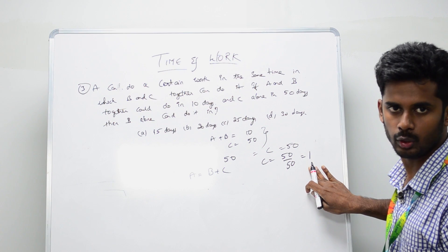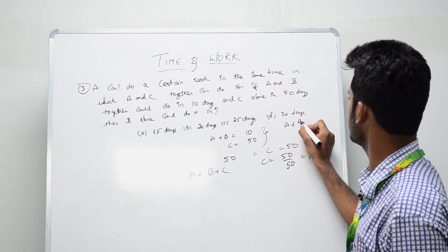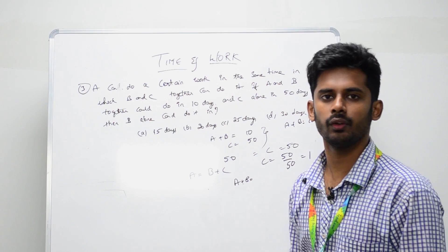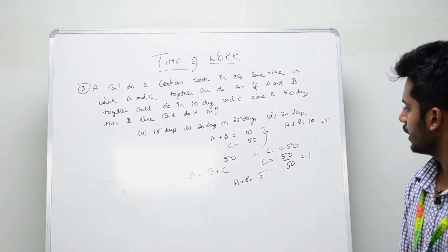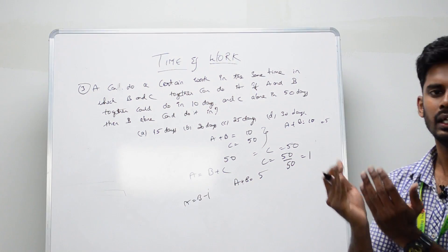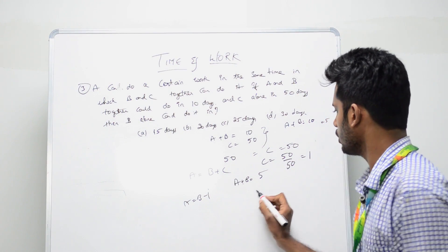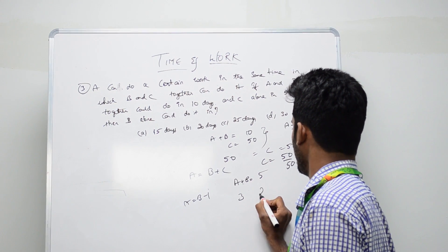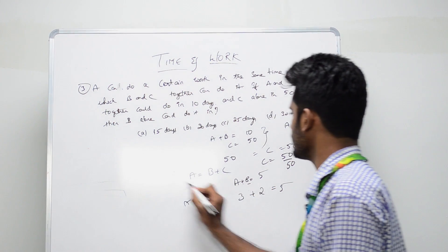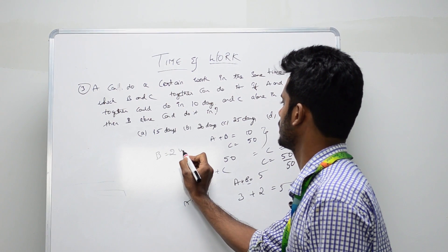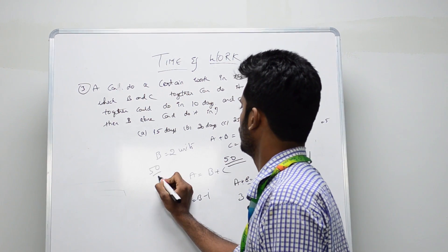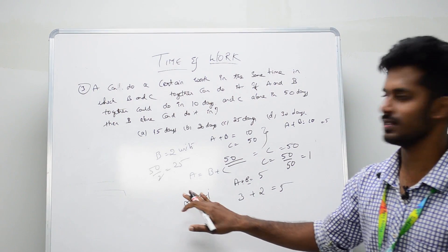A plus B together do 50 divided by 10, which is 5 units per day. We know A equals B plus C and C equals 1, so A minus B equals 1. Combined with A plus B equals 5, the only possibility is A equals 3 and B equals 2, since 3 plus 2 is 5 and 3 minus 2 is 1. So B does 2 units per day. For 50 total units, 50 divided by 2 is 25. The answer is 25 days.